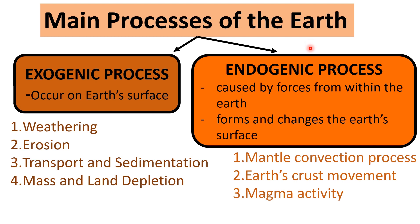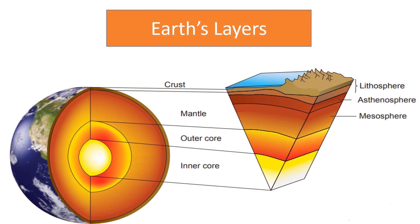Endogenic process is caused by forces from within the Earth. It forms and changes the Earth's surface. Examples of endogenic processes are mantle convection, Earth's crust movement, and magma activity. Recall what you have learned earlier about the Earth's layers — Earth consists of a crust, and mantle activity refers to activities that occur around the mantle.